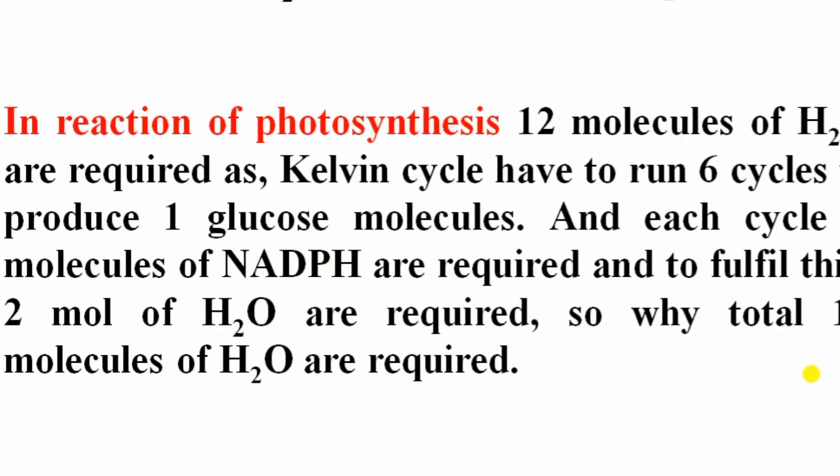Ruben, Hassid, and Kamen experimentally proved, using radioactive isotopes, that oxygen produced during photosynthesis comes from H₂O and not from carbon dioxide. Regarding stoichiometry: the Calvin cycle must run six times to produce one glucose molecule. In each cycle, two molecules of NADPH are required, and for each NADPH one molecule of H₂O is needed — so 12 molecules of H₂O are required total.